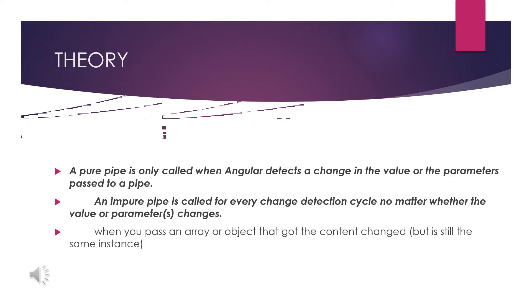An impure pipe is one where every change detection cycle occurs, no matter whether the value or parameters change. A pure pipe will consider the changes and take this as input and process functionality based on that.